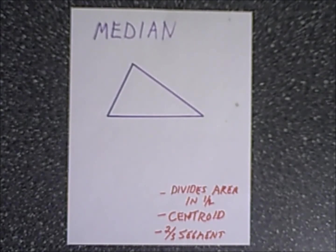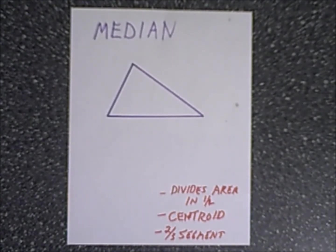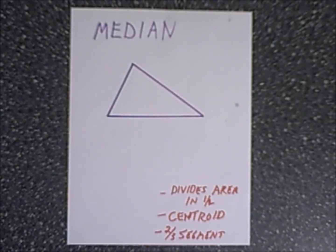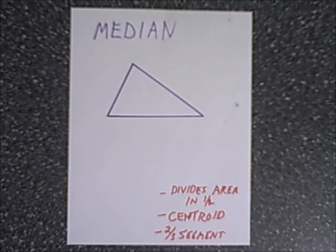In this video, we're going to talk about characteristics of a triangle, specifically the centers — focusing on the median, the angle bisector, the perpendicular bisector, and the altitude.